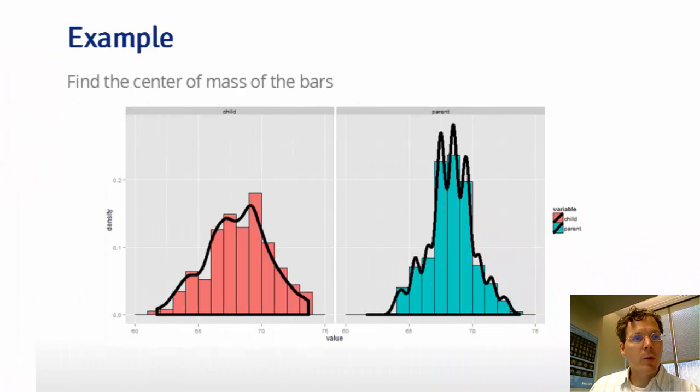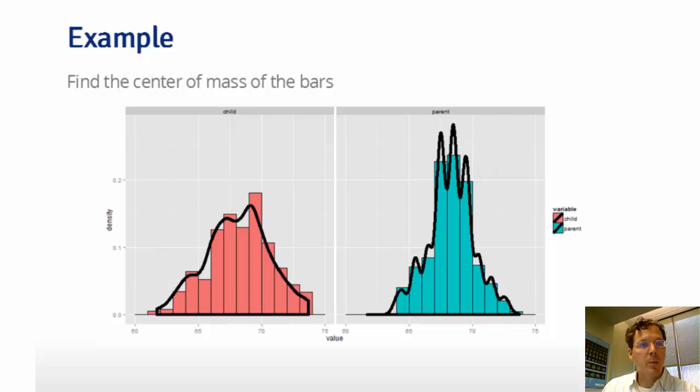So I have some code here to show an example of taking the sample mean of data and how it represents the center of mass just by drawing a histogram. So here I have this Galton data. The code can be found in the markdown file associated with the slides that you can get from Github. Here we have parents' heights and children's heights in a paired data set. I have a histogram for the child's height and the parent's height. And I've overlaid a continuous density estimate.